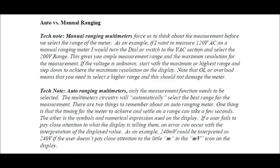Auto versus manual ranging. Manual ranging multimeters force us to think about the measurement before we select the range. As an example, if I want to measure 120V AC on a manual ranging meter, I would turn the dial to the VAC section and select the 200V range. This gives you ample measurement range and maximum resolution. If the voltage is unknown, start with the maximum range and step down. Note that OL or overload means you need to select a higher range, and this should not damage the meter.